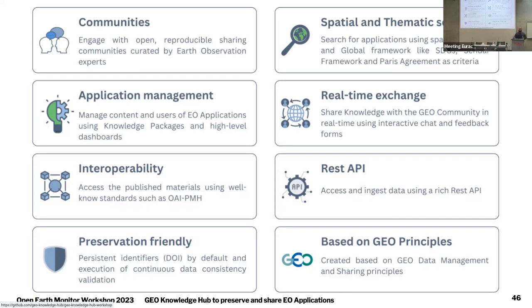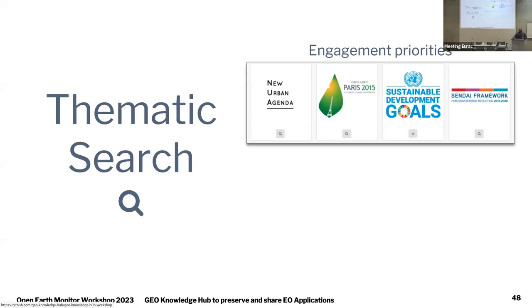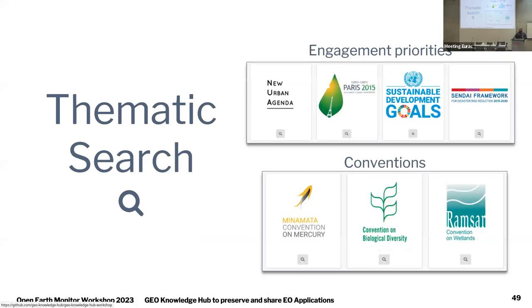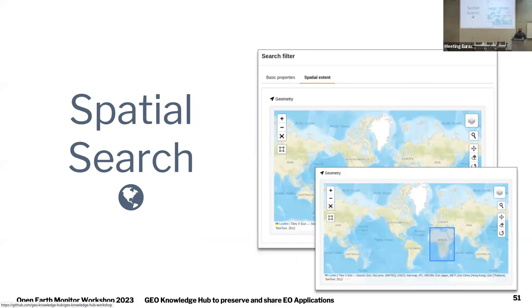When a user needs to search for a knowledge package, it is possible to use a thematic search. This enables users to get content by GEO engagement priorities like the New Urban Agenda and Sendai Framework, and also by convention — for example content related to the Minamata Convention. We have also implemented a spatial search which helps users get content from specific regions.